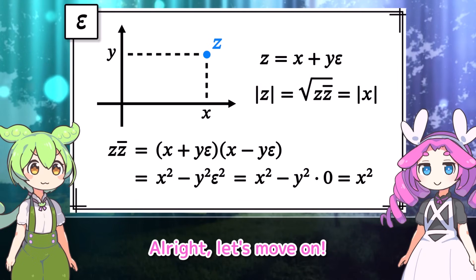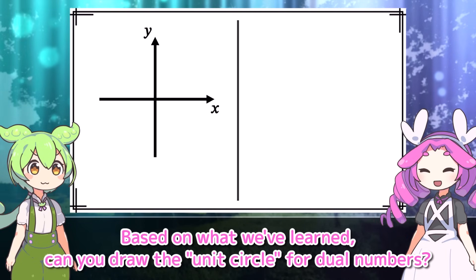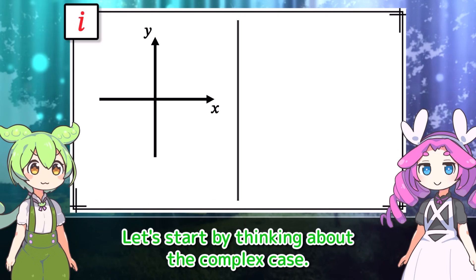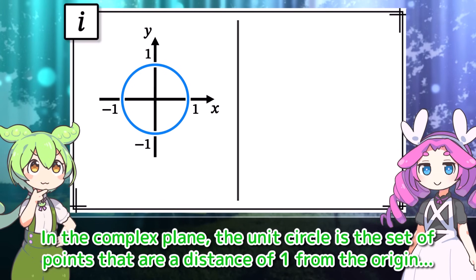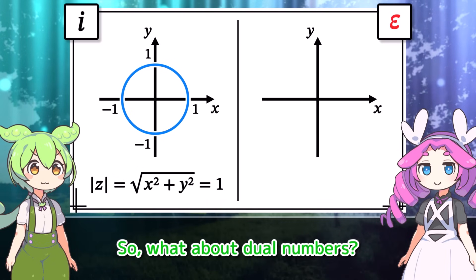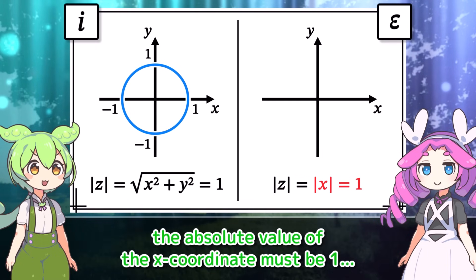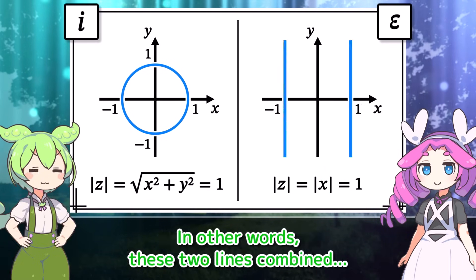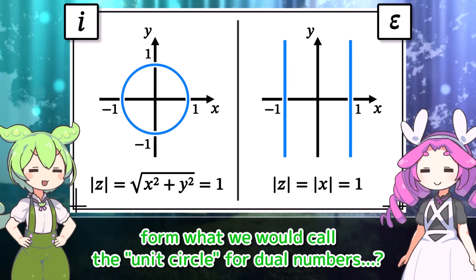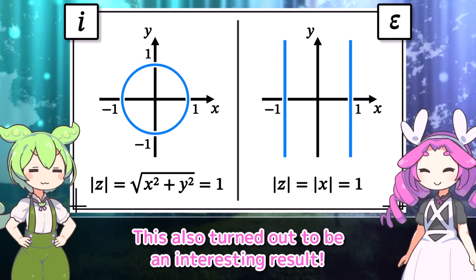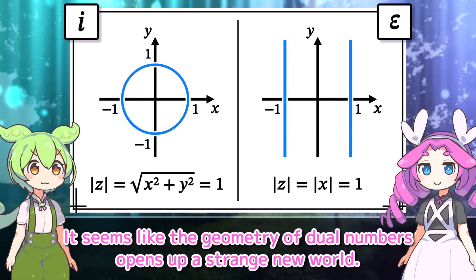Now, based on what we've learned, can you draw the unit circle for dual numbers? In the complex plane, the unit circle is the set of points at distance 1 from the origin — the set of complex numbers with absolute value 1. For a dual number to have absolute value 1, the absolute value of the x-coordinate must be 1, so the x-coordinate must be either 1 or negative 1. These two lines combined form what we would call the unit circle for dual numbers. At this point, it doesn't really look like a circle anymore. The geometry of dual numbers opens up a strange new world.